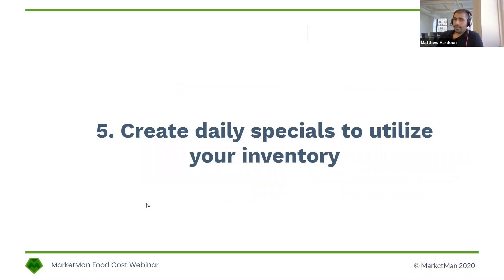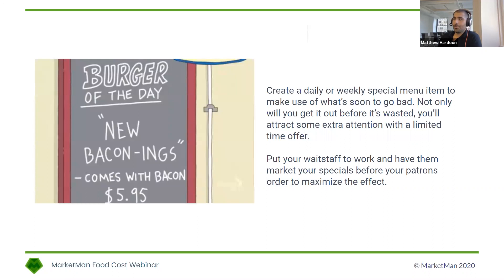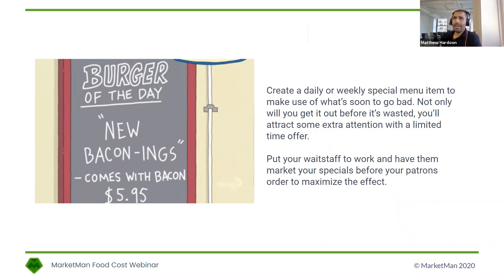Number five is all about waste — creating daily specials to make sure that you're using your inventory and that nothing is going to waste. If you have items that are expiring, spoiling, or have short shelf lives, please create daily or weekly special menu items to make sure you're getting rid of what's going bad. It's a little more difficult now that a lot of us don't have in-store dining to push those specials, but there are so many creative ways via mobile ordering apps to prominently feature those daily specials and clear out your inventory.